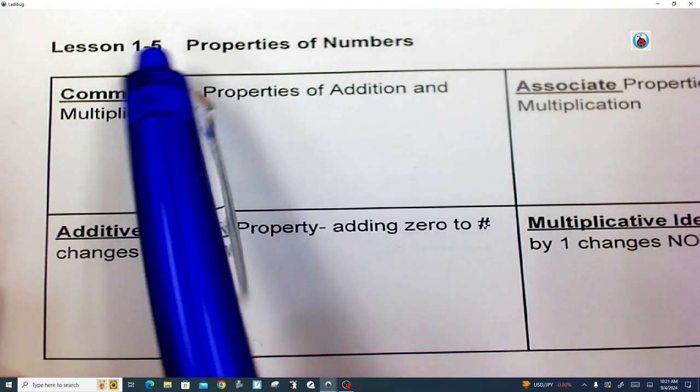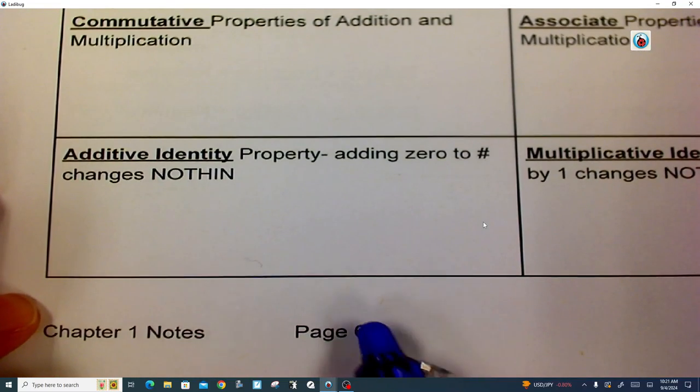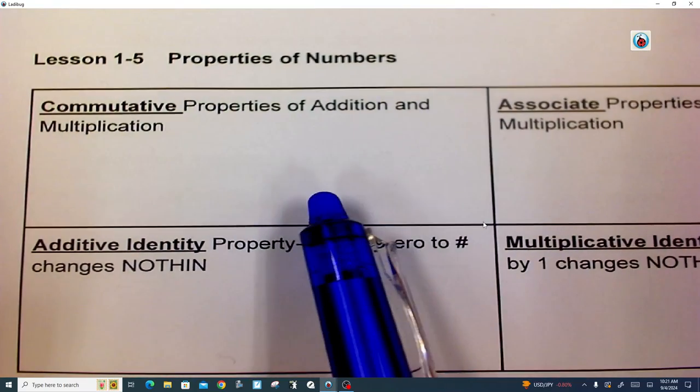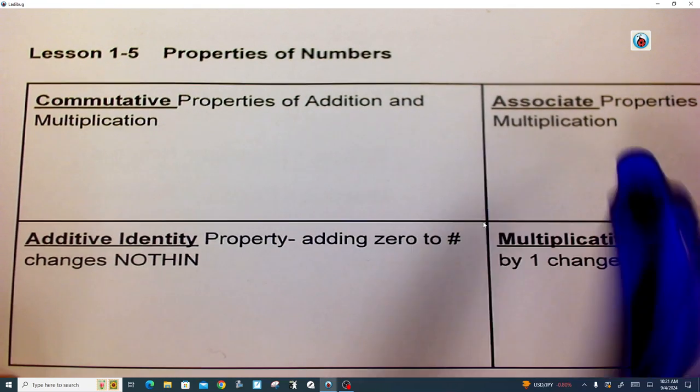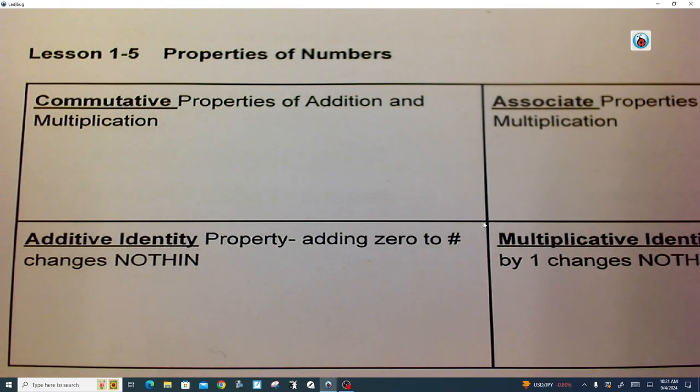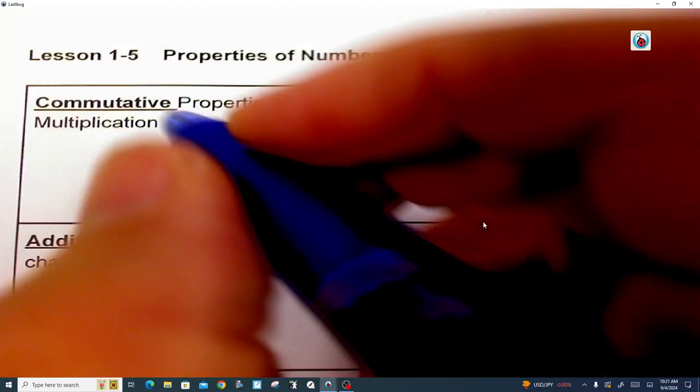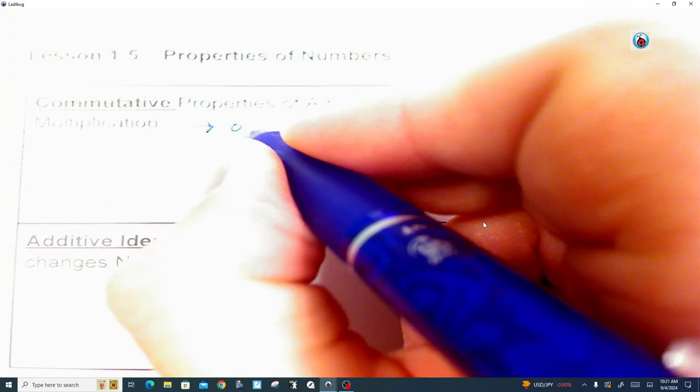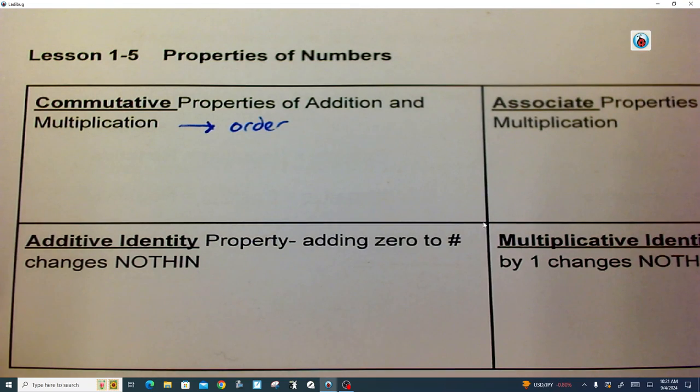Okay, so if you open up your notes to Lesson 1-5, it's down here on page 6. That's where it's starting. We're going to do a real quick review of four different properties. I'm going to pause the video in between. Commutative Properties of Addition and Multiplication, what that is, is just changing the order of the numbers there.